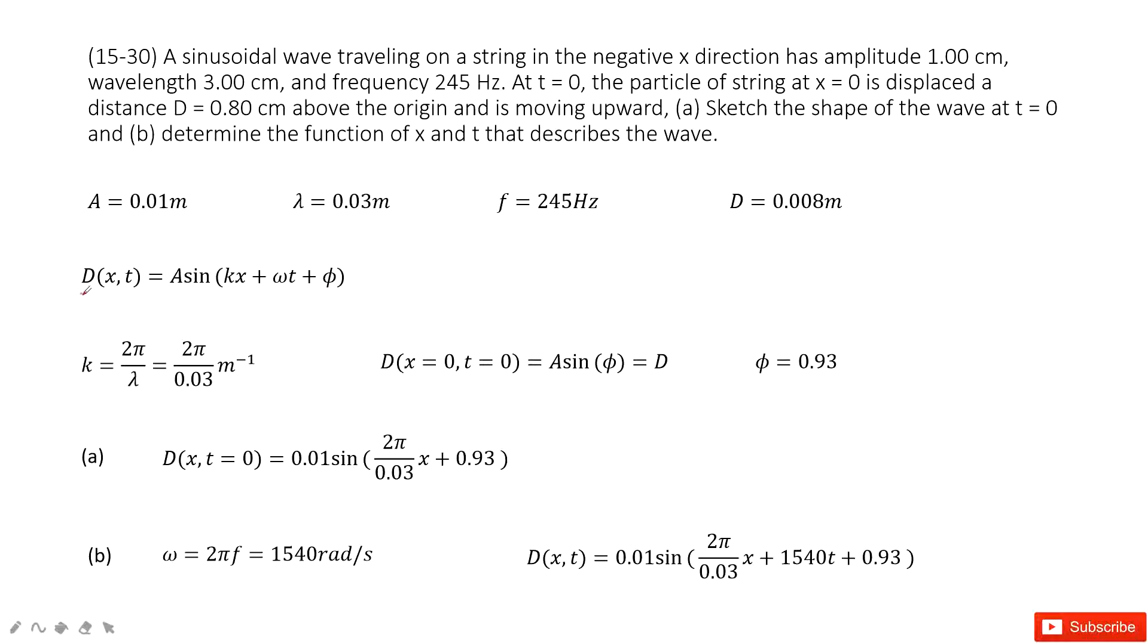The general wave function looks like this one. We need to find the parameters a, k, omega, and phi. The wave quantity is given, amplitude is given, wavelength is given, frequency is given.